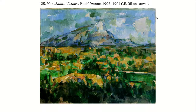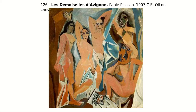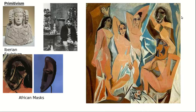Let's do a slight review. We have Paul Cézanne with Mont Saint-Victoire — he was Cubism, flattening out round or three-dimensional forms. We also have another Cubist artist: Pablo Picasso, Les Demoiselles d'Avignon — femme fatale, primitivism.